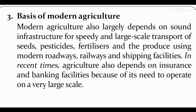Third: Basis of Modern Agriculture. Modern agriculture also largely depends on sound infrastructure for speedy and large-scale transportation of seeds, pesticides, fertilizers and produce, using modern roadways, railways, and shipping facilities. Farmers को अच्छे quality के seeds और pesticides के लिए अच्छी road और transport infrastructure चाहिए।